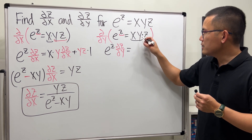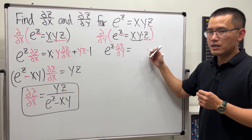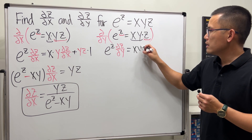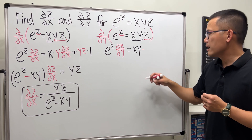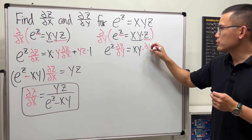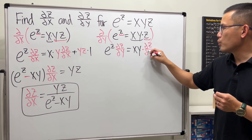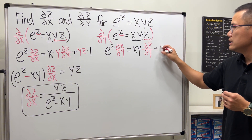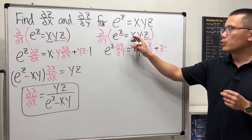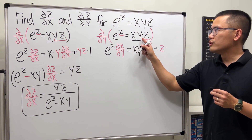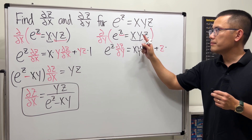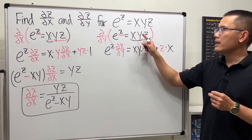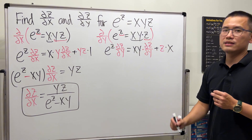This will be my first function and this will be my second function. Bring down the first function times the derivative of the second, which is partial z with respect to y. Add the second function z times the derivative of the first with respect to y — derivative of xy in the y world is just x.